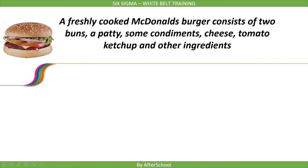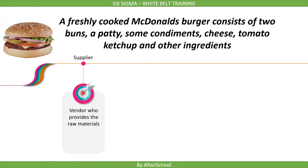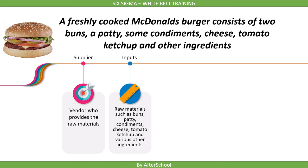As an example, let's create a SIPOC for the process of cooking a McDonald's burger. A freshly cooked McDonald's burger consists of two buns, a patty, some condiments, cheese, tomato, ketchup, and other ingredients. The supplier is a vendor who provides the raw materials. There could be one supplier or multiple suppliers for different raw materials. The inputs include buns, patties, condiments, cheese, tomato, ketchup, and various other ingredients.